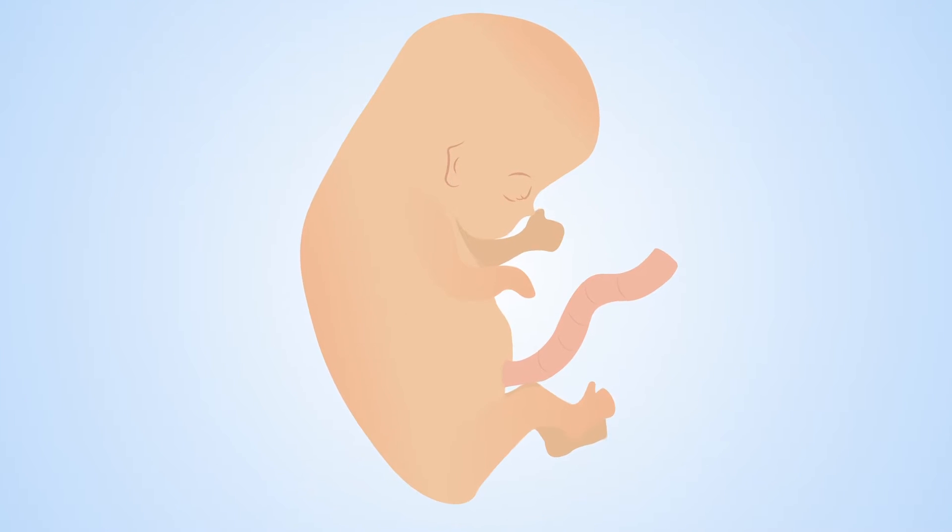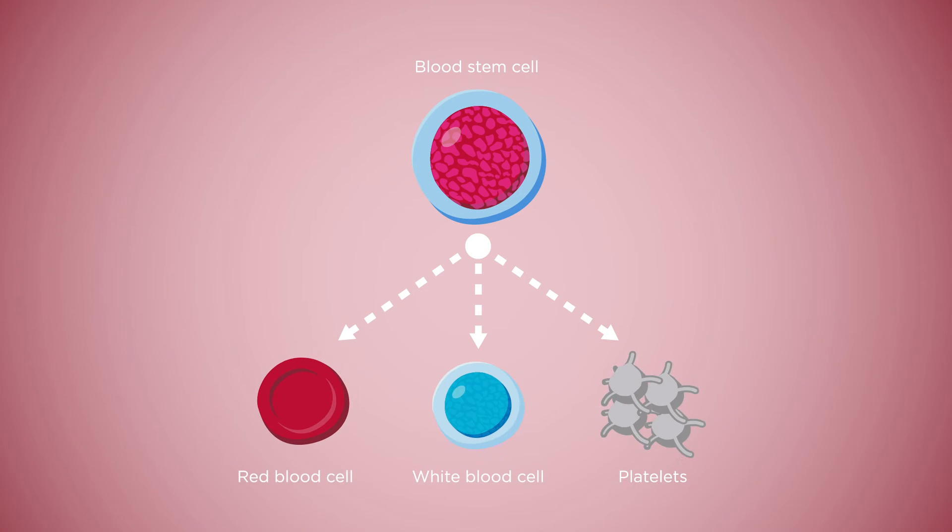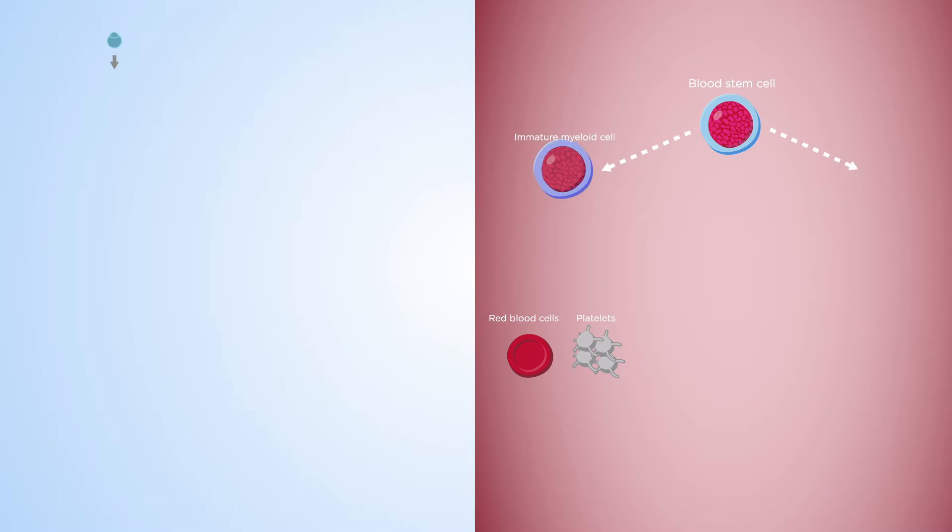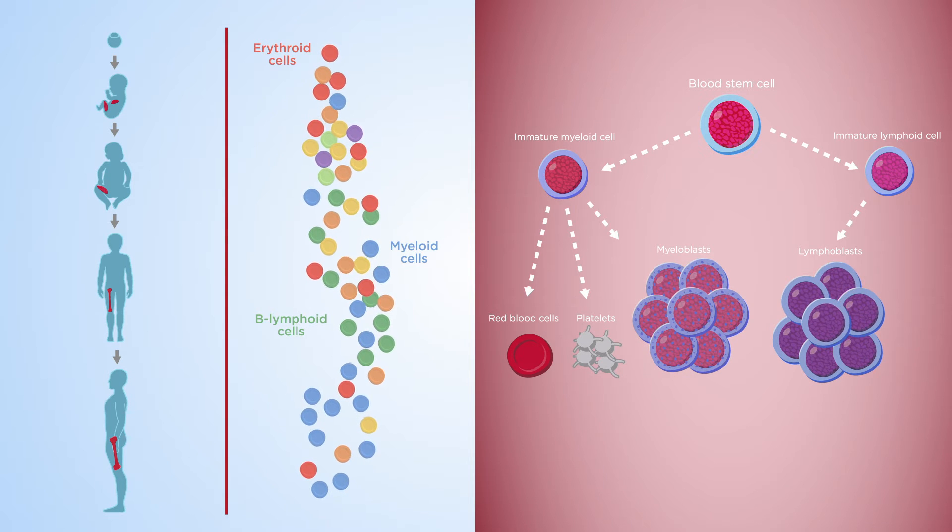Blood cell development begins a few weeks after conception, when hematopoietic stem cells arise and differentiate. This process changes throughout our lifetime, from pre-birth through to old age, and disruptions to this process throughout development can result in leukemia.